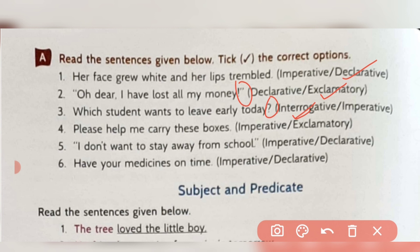Fourth — 'Please help me carry these boxes' — it is imperative because the word 'please' is used. Fifth — 'I don't want to stay away from school' — this is declarative because it is a simple statement. Sixth — 'Have your medicines on time' — this is imperative; it is a suggestion.